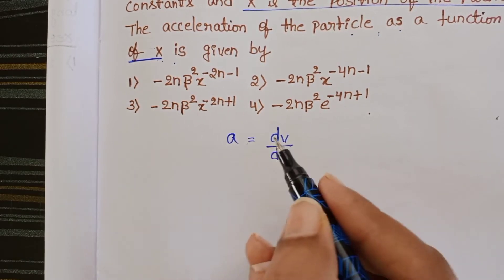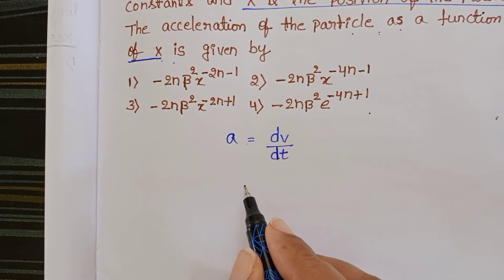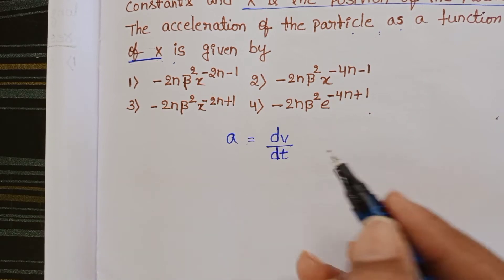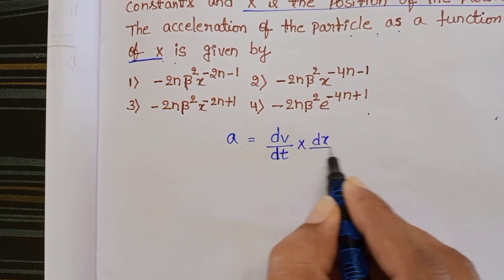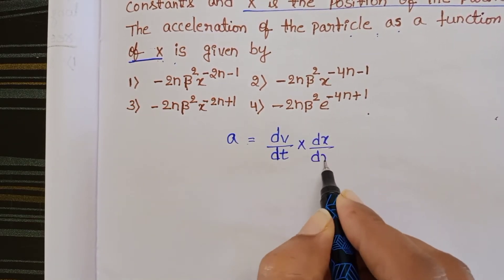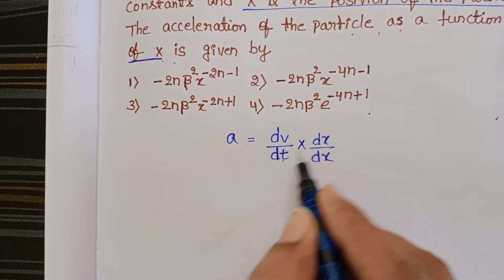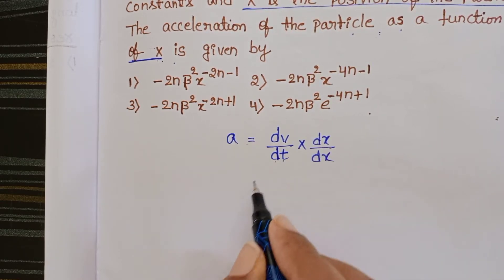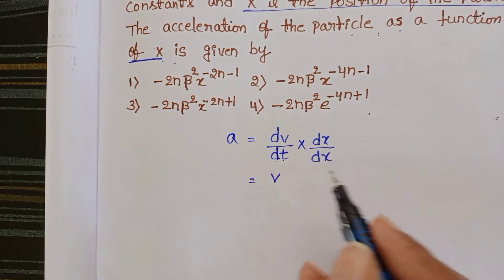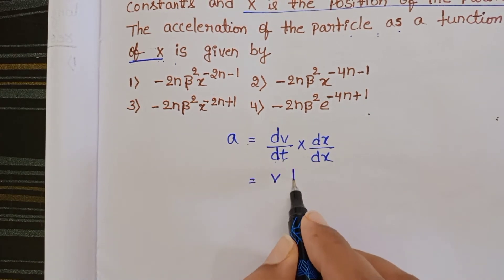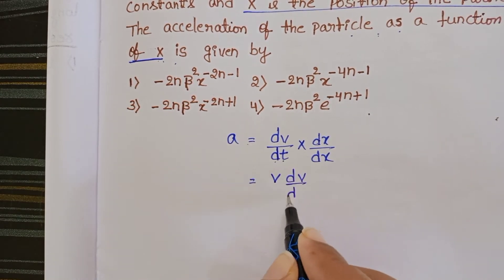But the given acceleration is a function of x, so we multiply and divide by dx/dt. Since dx/dt is velocity, this gives us a = v·(dv/dx).